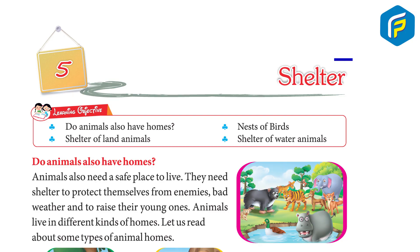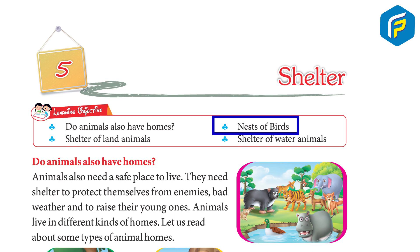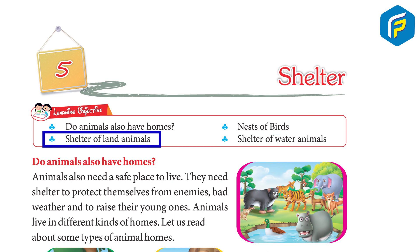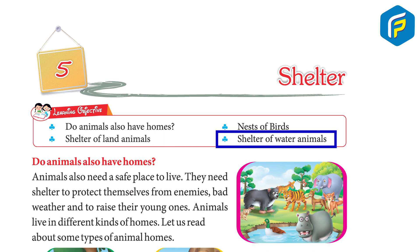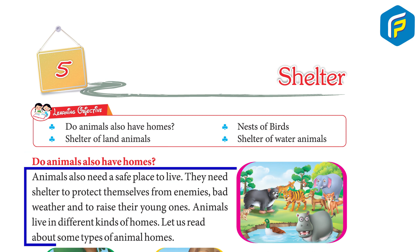Chapter 5: Shelter. Learning objective — do animals also have homes? Animals also need a safe place to live. They need shelter to protect themselves from enemies, bad weather, and to raise their young ones. Animals live in different kinds of homes.